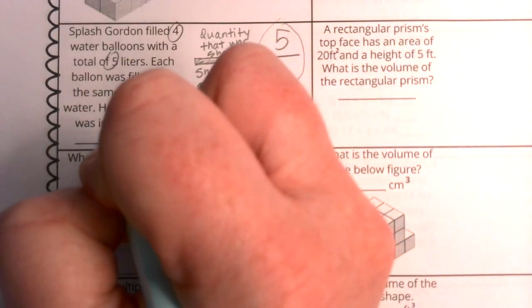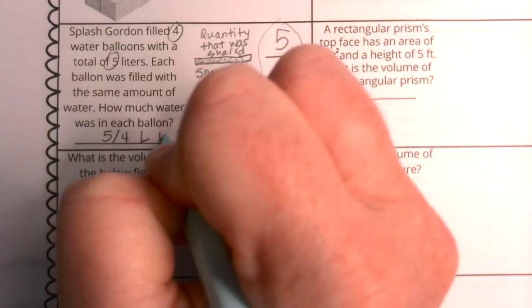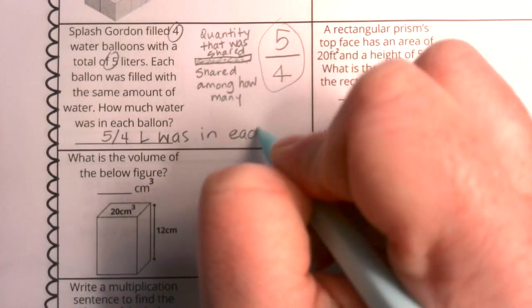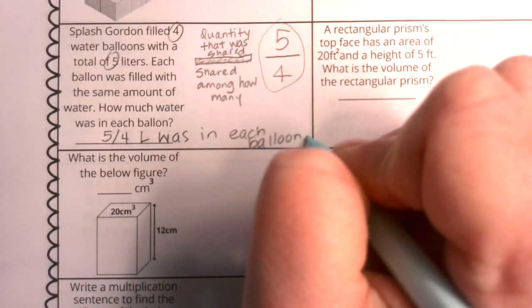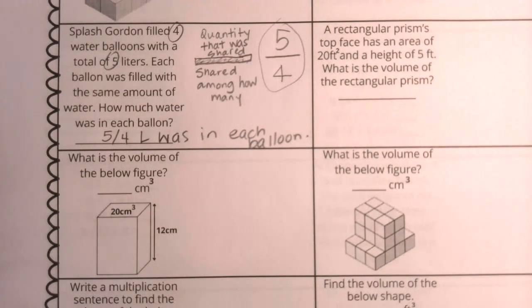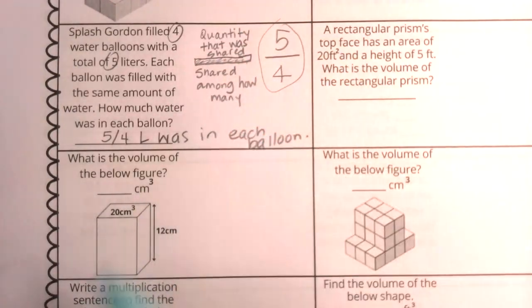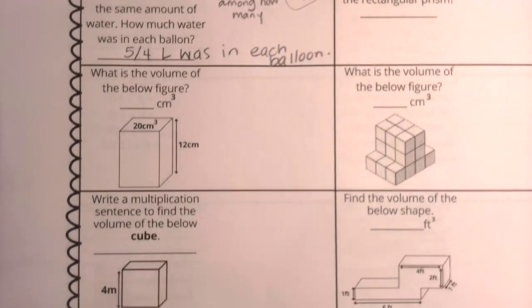How much water was in each balloon? Five-fourths of a liter was in each balloon. That is what that means. This thinking is the hallmark of understanding fractions as quotients.